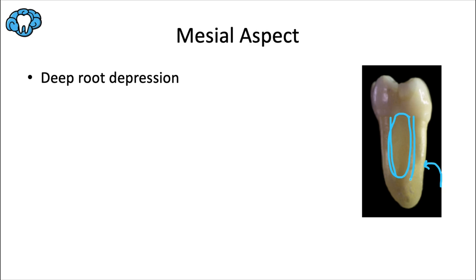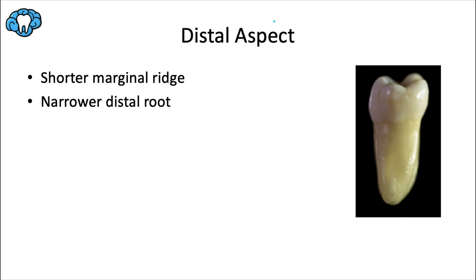For the distal aspect, we see a shorter marginal ridge, which enables us to see more of the occlusal surface from this view. There's also a flatter cervical line, and the distal root is a little bit narrower than the mesial root. From this angle you can also appreciate the difference in cusp heights — the blunt facial cusps versus the tall lingual cusps.